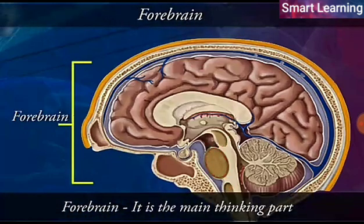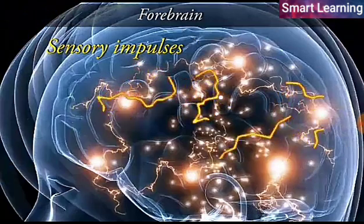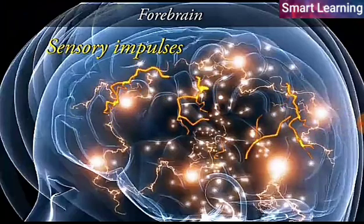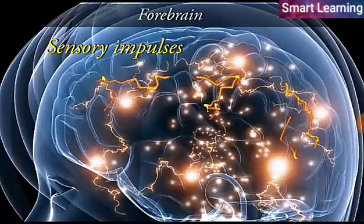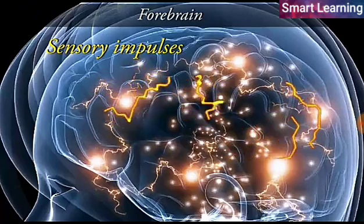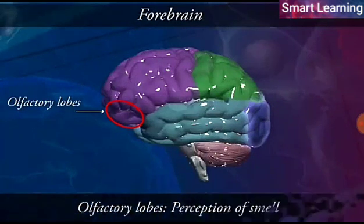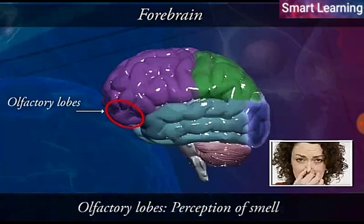The forebrain forms the greatest part of the brain and is the main thinking part. It has regions which receive sensory impulses from various receptors, and it further consists of three regions. The first region is the olfactory lobes — these are the parts of the forebrain involved with the perception of smell.